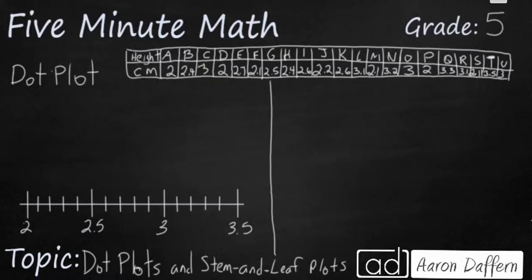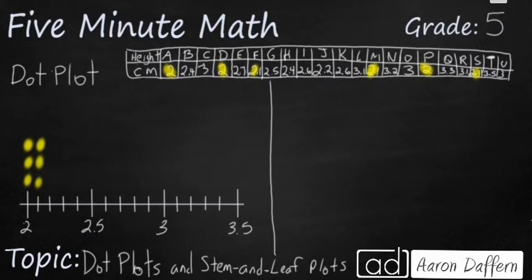Let's start with 2. I've got a 2 on plant A, a 2 on plant D, and a 2 on plant P. So I have 1, 2, 3 plants that have a height of 2 centimeters. Next I'll look for 2.1. I've got one on F, one on M, and one on S, so I'm going to put another three dots — 1, 2, 3. When you're making your dot plot, you want to make sure your dots are even and next to each other so you can look at heights.